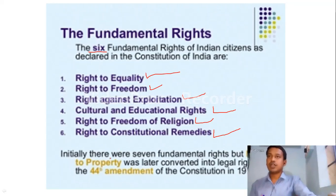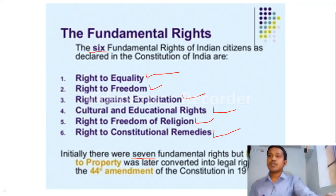Initially there were seven fundamental rights, but the Right to Property was removed. So now there are six fundamental rights in India.